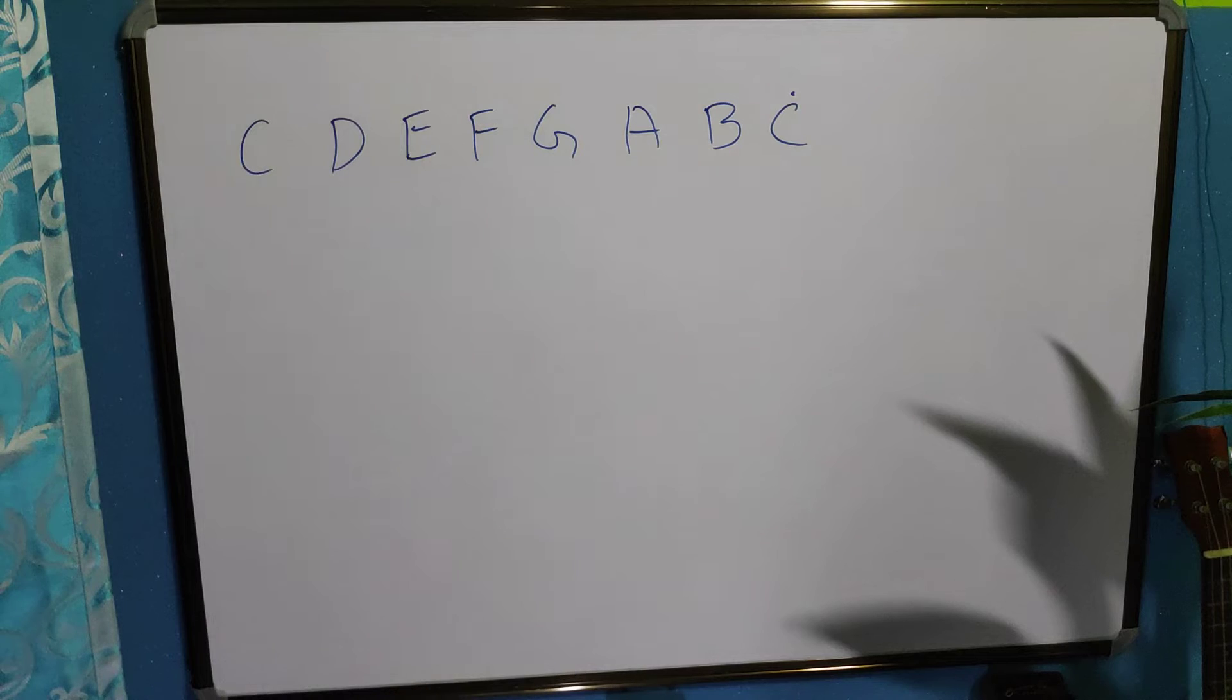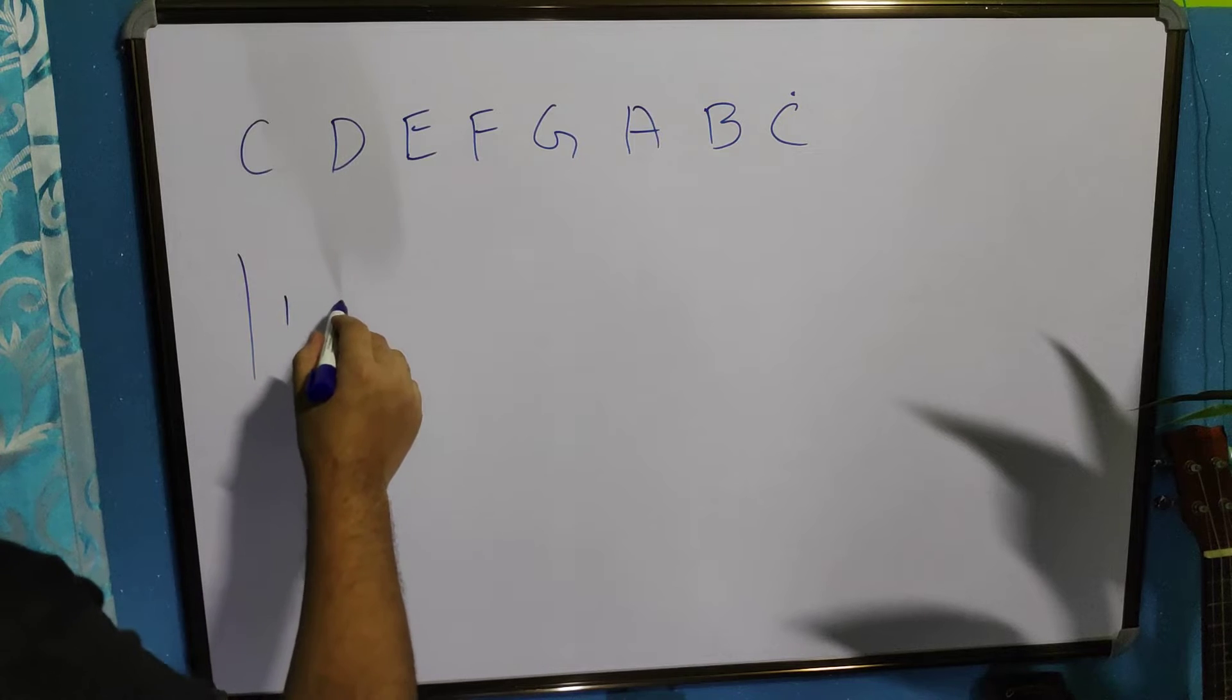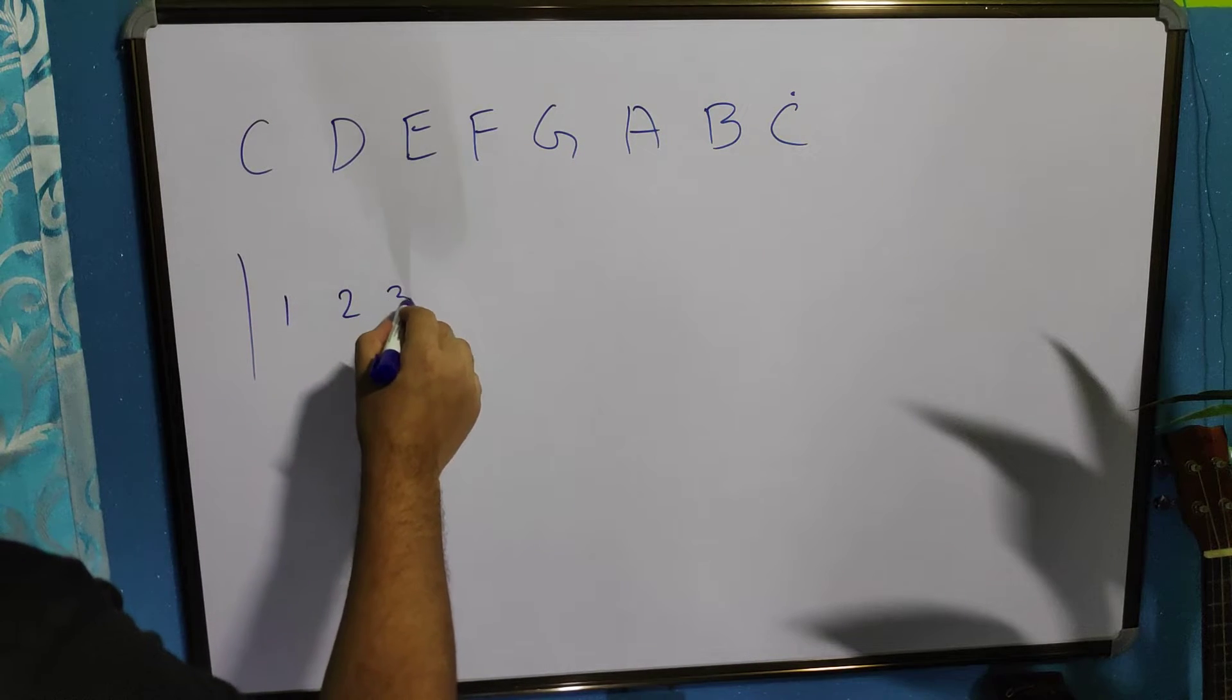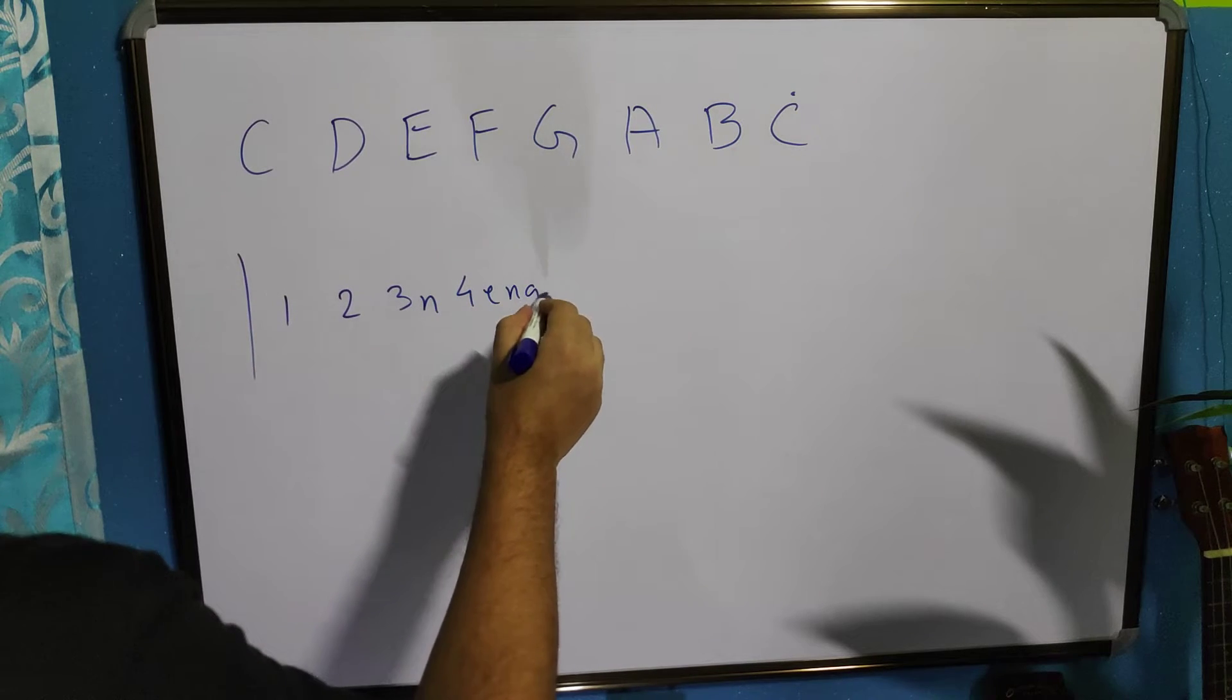This is the octave. Now, we'll make some bars, some rhythm patterns. Like one, two, three n, four e n a.